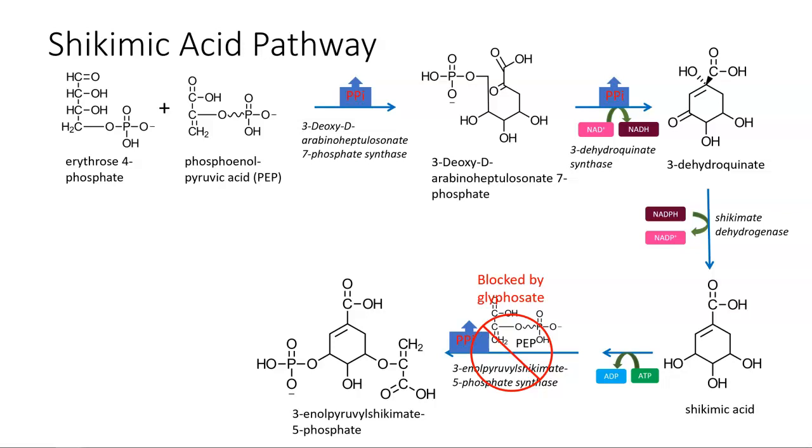The 3-enolpyruvylshikimate-5-phosphate is changed into chorismic acid by the enzyme chorismate synthase with the release of a phosphate. This begins the process of formation of cyclic amino acids.